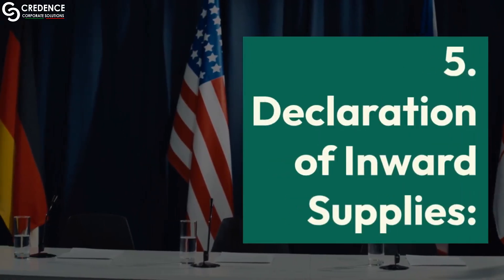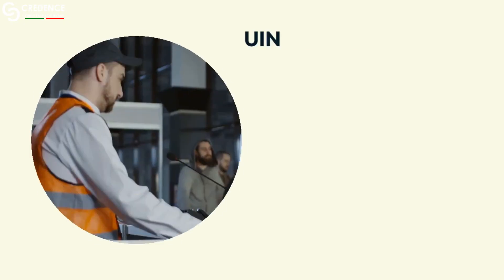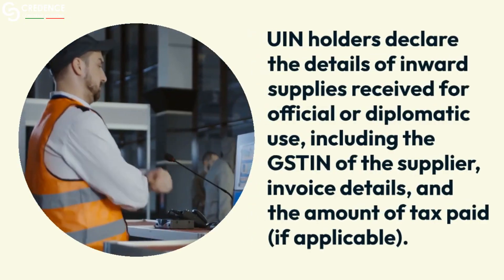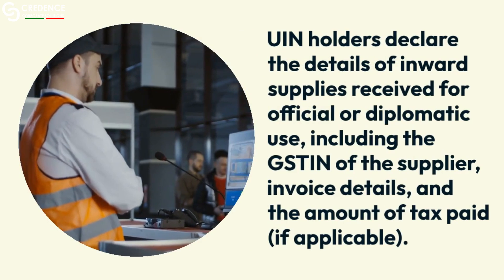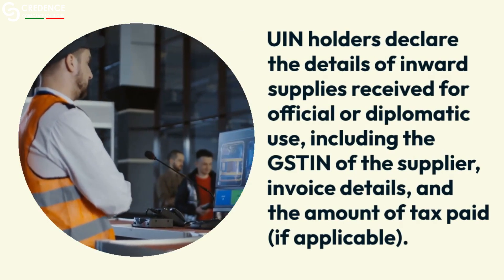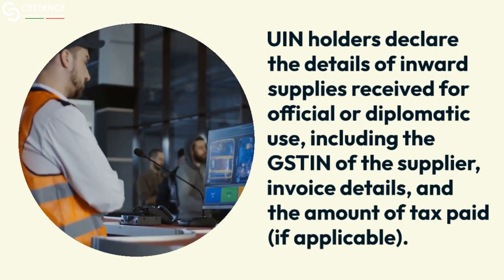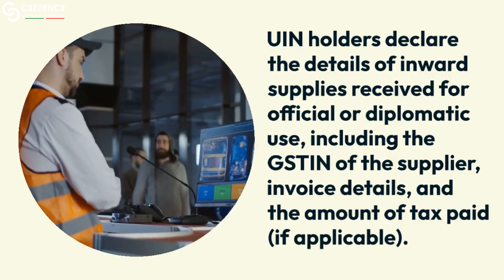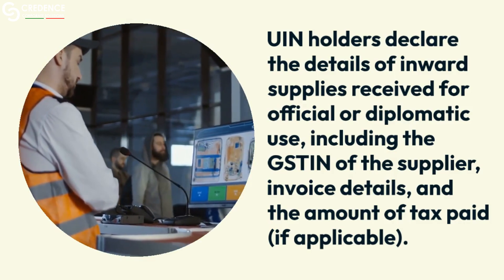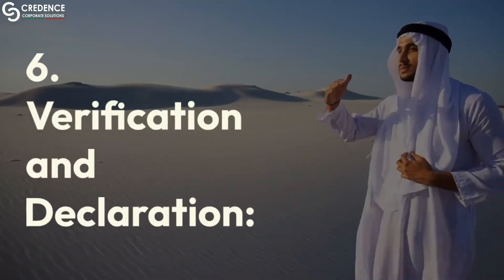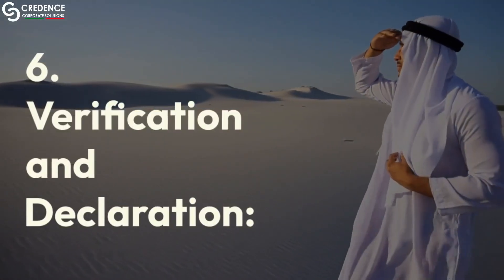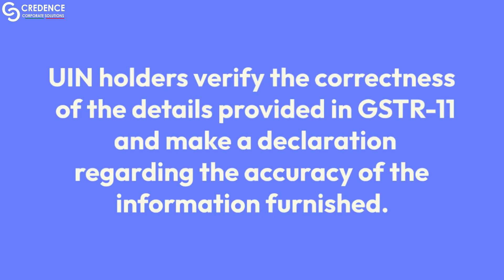Feature 5: Declaration of Inward Supplies. UIN holders declare the details of inward supplies received for official or diplomatic use, including the GST of the supplier, invoice details, and the amount of tax paid, if applicable. Feature 6: Verification and Declaration. UIN holders verify the correctness of the details provided in GSTR 11 and make a declaration regarding the accuracy of the information furnished.